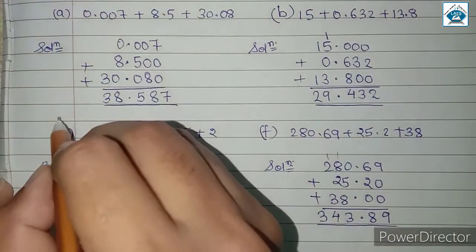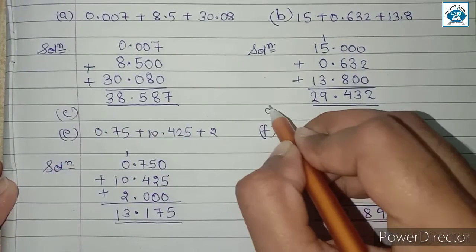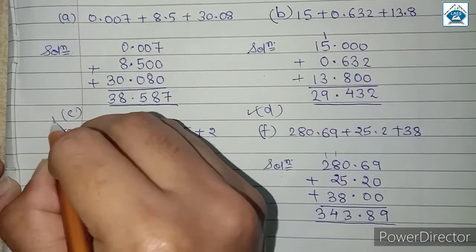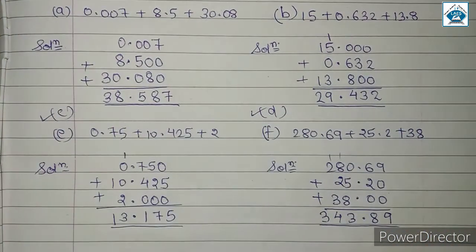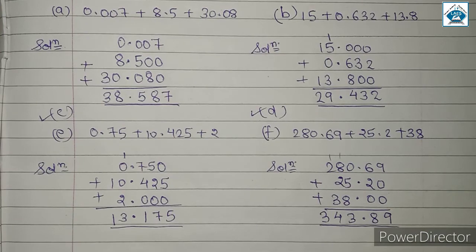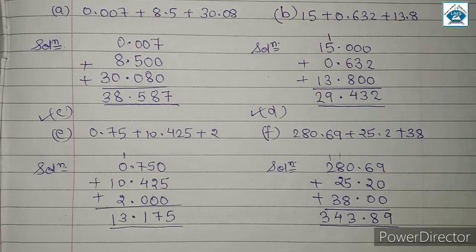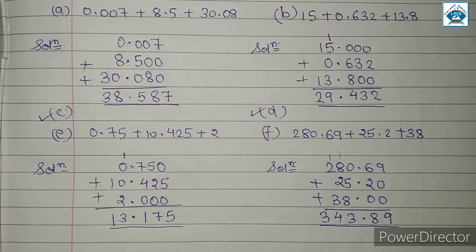Sub-questions c and d I have not solved here. This is homework for you. It is very simple — there are also 3 decimals given there, and in the same way, using vertical addition, you need to find the sum and write the solution in your notebook.